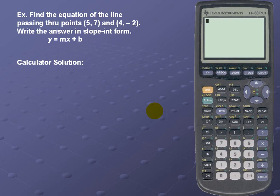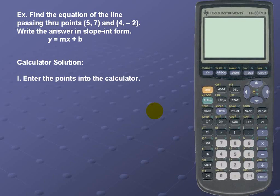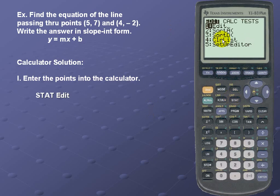Write the answer in slope-intercept form, which is y = mx + b. Here's the calculator solution. First, we must enter the points into the calculator. To accomplish this, we'll enter the STAT area and we're already in Edit, so we'll simply hit Enter.